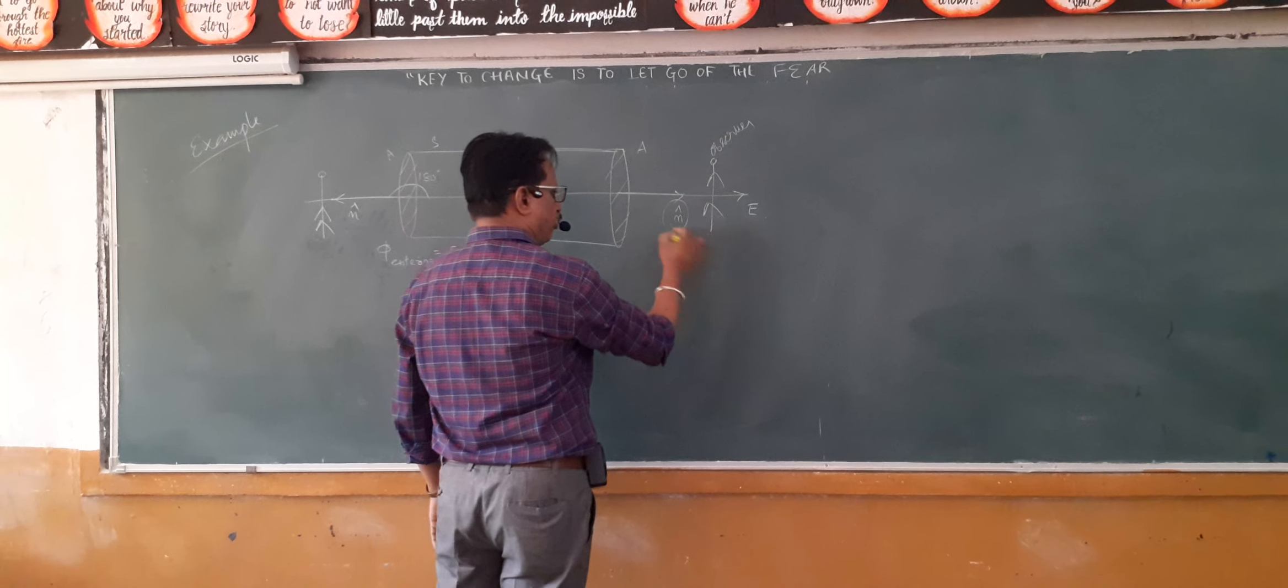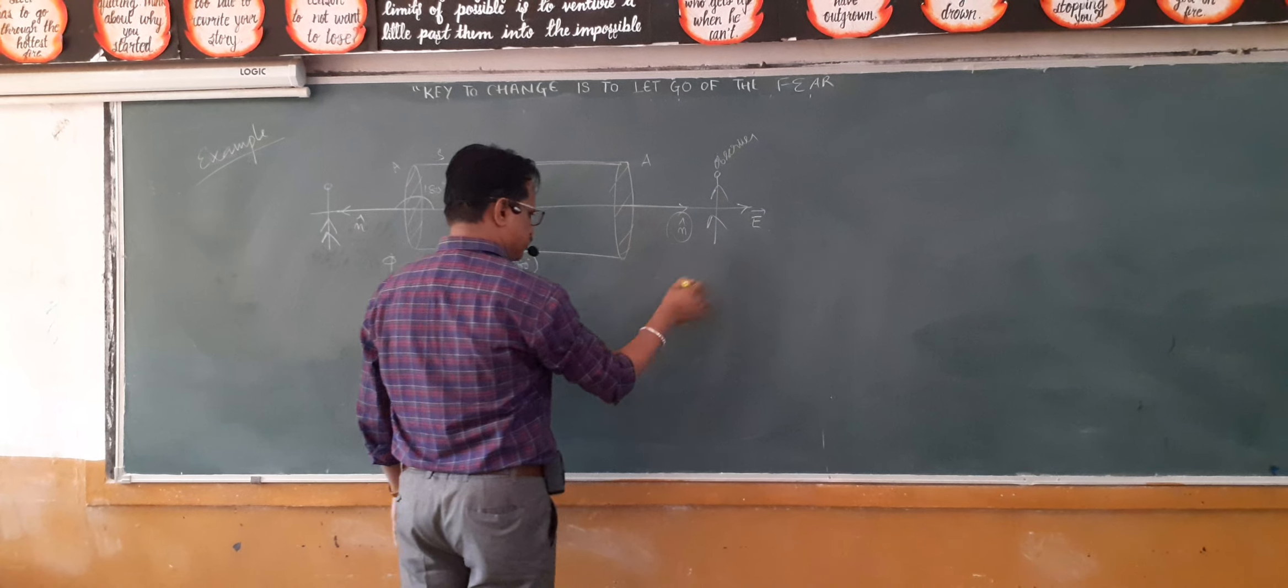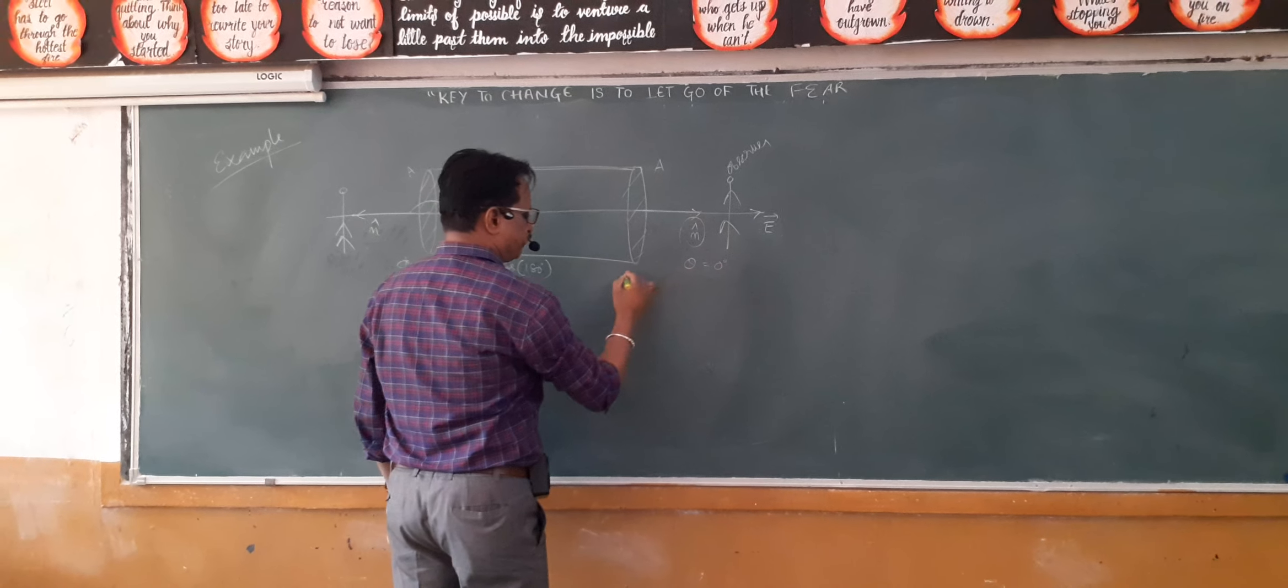Now the angle between normal and field is 0. So the flux leaving is equal to E A cos 0, which is equal to positive EA. With this we need to understand in which direction we should take the normal.